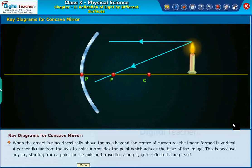When the object is placed vertically above the axis beyond the center of curvature, the image formed is vertical.